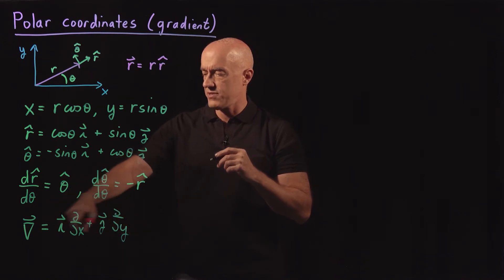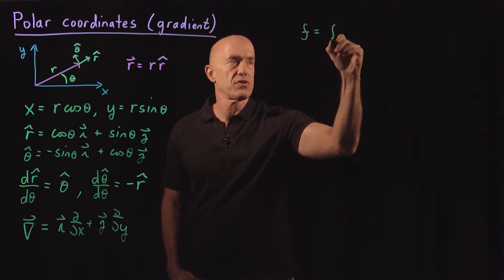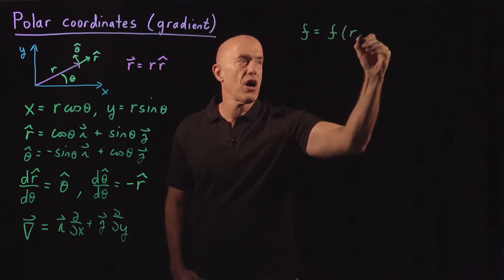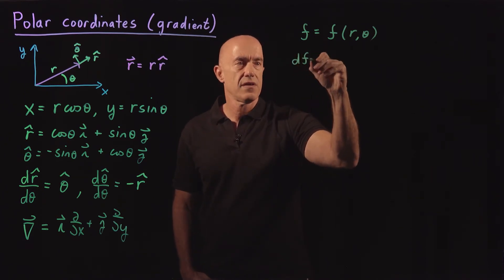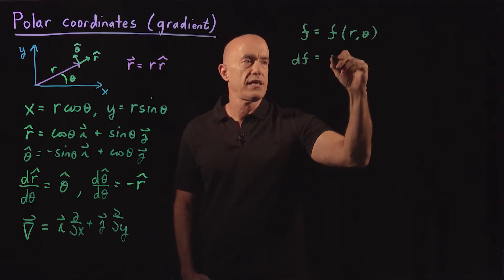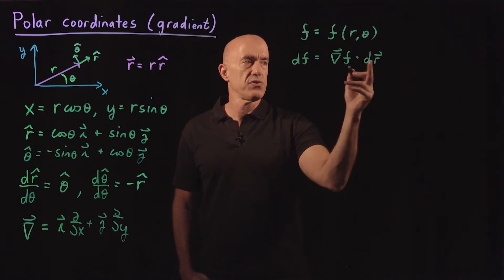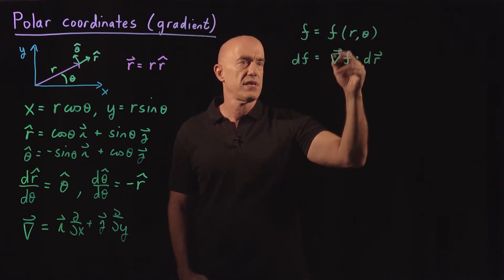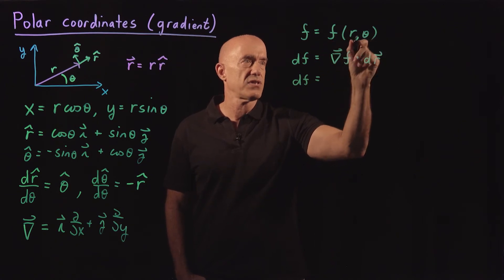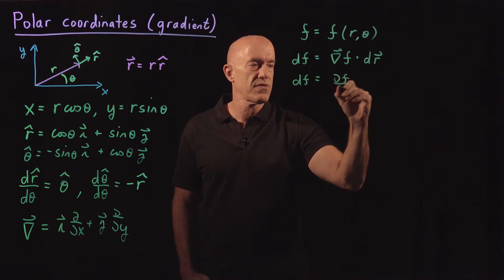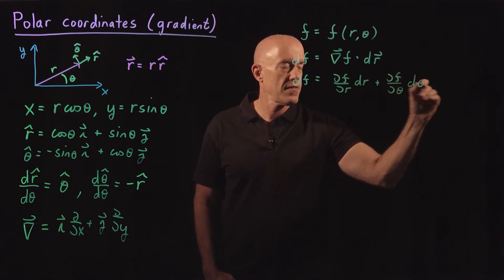How do we transform the gradient to polar coordinates? The easiest way is to consider a scalar function f, which is a function of the polar coordinates r and theta. If we look at the differential df, we know that we define it in terms of the gradient as the gradient of f dotted with dr. We're going to use this to figure out what the gradient of f is in polar coordinates. We also know that df, looking directly at f as a function of r and theta, equals (∂f/∂r) dr plus (∂f/∂θ) dθ.